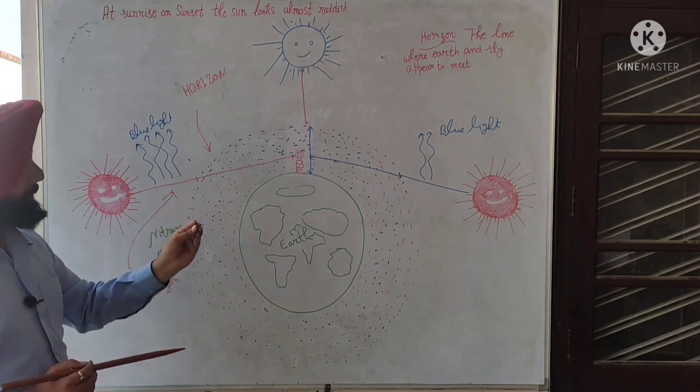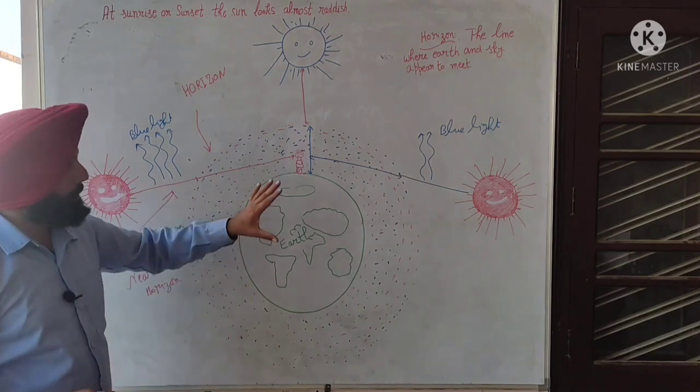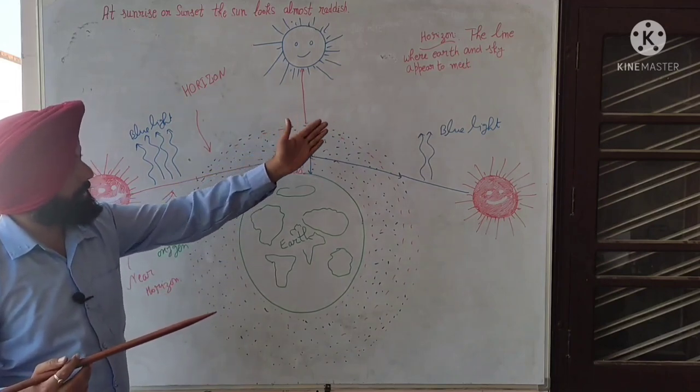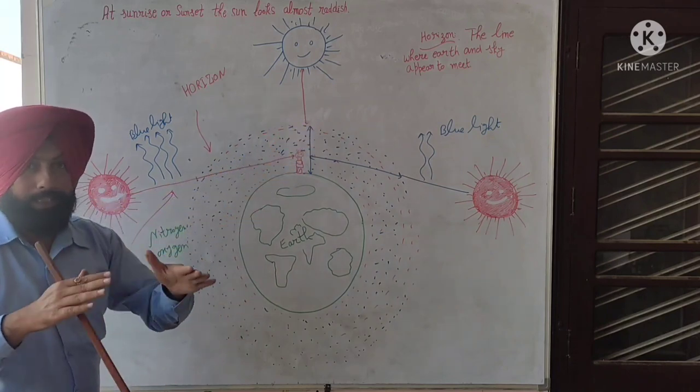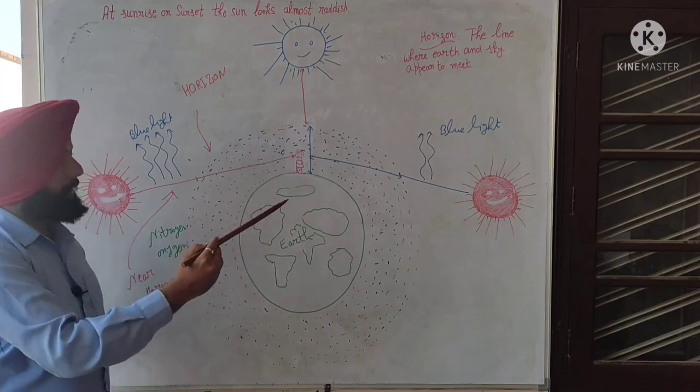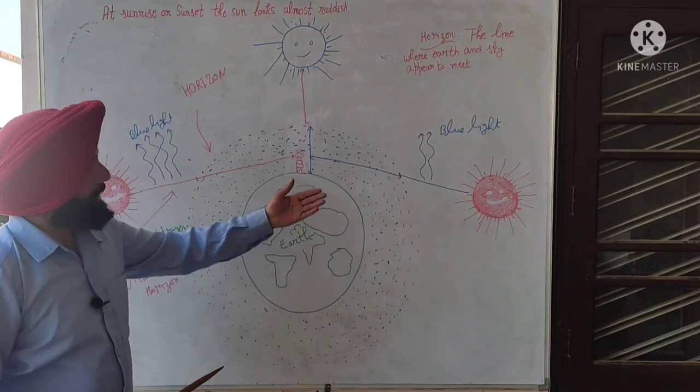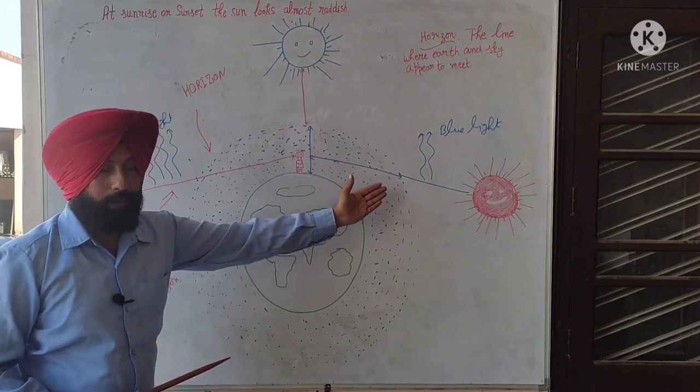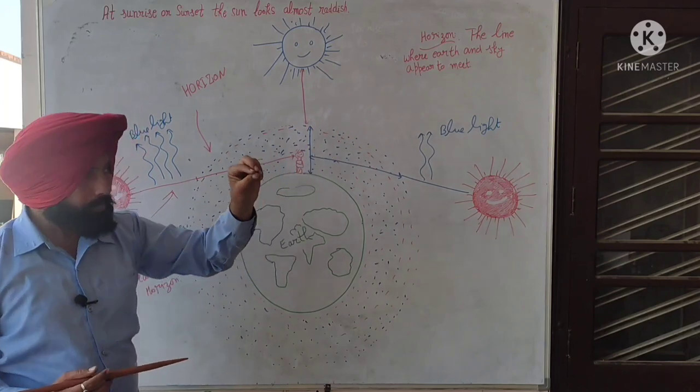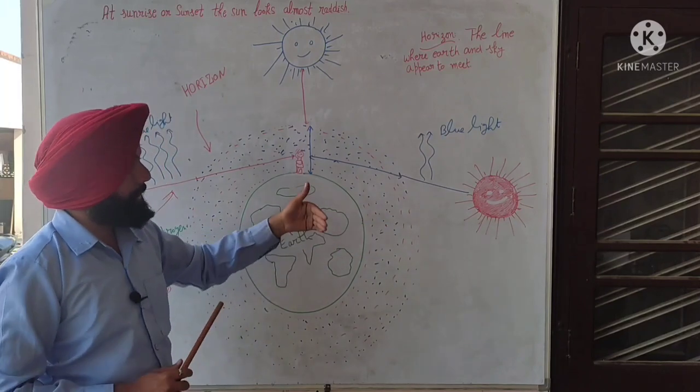But in this case, the distance near the horizon, the blue light is scattered away. The red wavelength light enters our eyes. This is the main concept about the horizon, where the atmosphere meets with the earth. So due to this distance at the time of sunrise and sunset near the horizon, blue light is scattered and red light with longer wavelength scatters less.